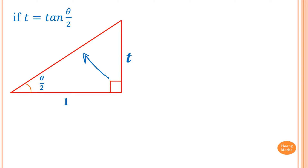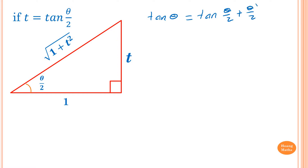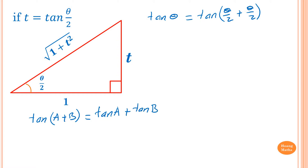From Pythagoras' theorem, the hypotenuse is the square root of 1² + t². Now let's work out tan(θ) in terms of t. tan(θ) is the same as tan(θ/2 + θ/2), and from the trig identity, tan(a+b) equals tan(a) plus tan(b) over 1 minus tan(a)tan(b).